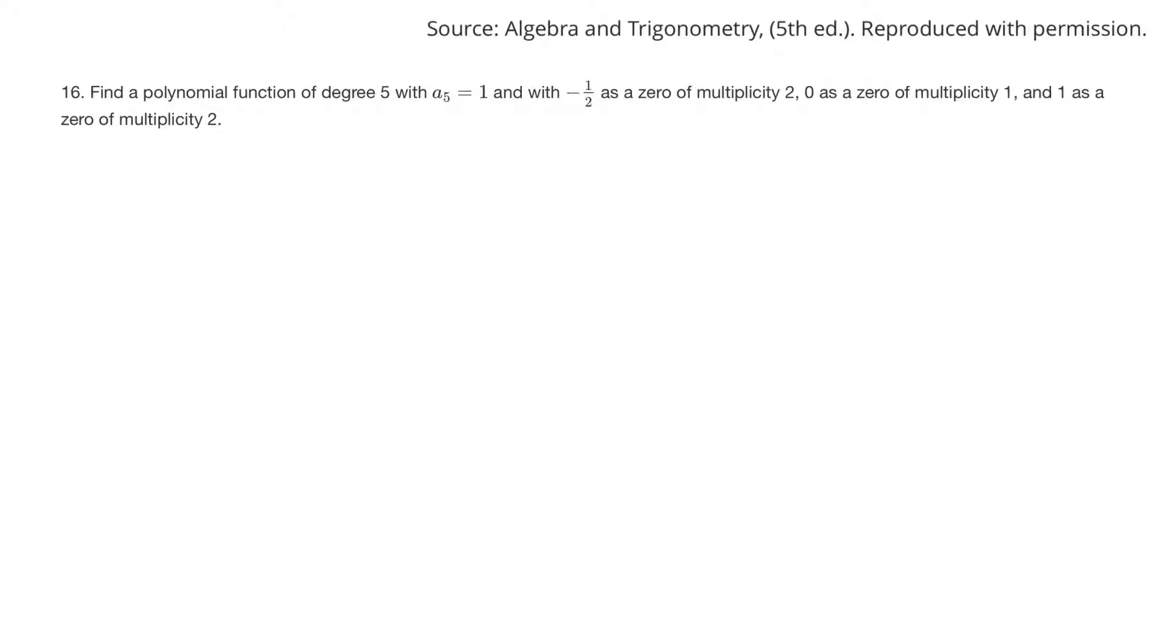Here's another one, similar kind of thing. Degree 5 with a 5 equals 1. So a negative half as a zero, multiplicity 2, so it'd be x plus 1 half, multiplicity 2. Zero with multiplicity 1, so it'd just be x. And then 1 as a zero, multiplicity 2, so it'd be an x minus 1, and there'd be 2 of them. And the a 5, I'm not sure what that means. Anyway, I would write that as my function, because it has all the zeros listed for you.